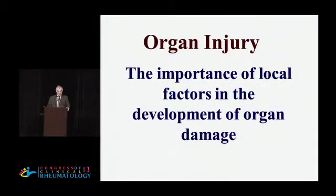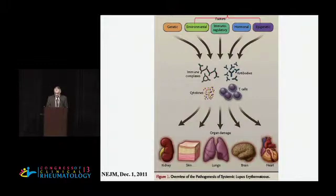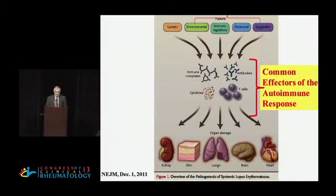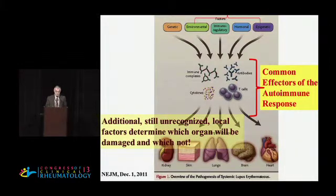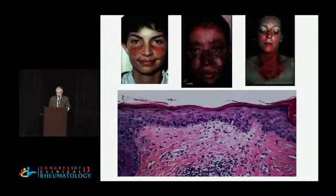We'll continue talking about organ injury. I'll try to stress again what I pointed out in the morning — the importance of local factors and development of organ damage. This is my favorite cartoon where a bunch of factors shown at the top of the slide generate common factors of that immune response. We have to solve the dilemma of why certain organs are involved in certain patients and other organs in other patients. The premise here is that local, still unrecognized factors are important for the execution of damage.